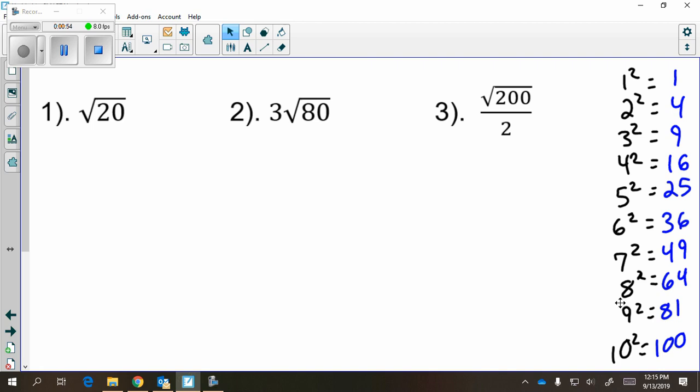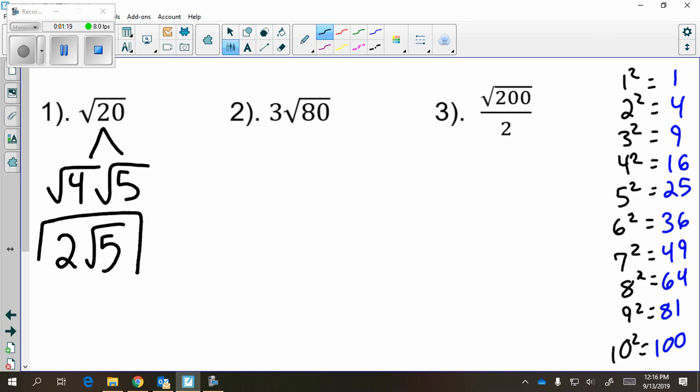So we're going to rewrite this as the square root of 4 times what gives me 20? 5. It's important that you put the radical over both of them. Now, you can take the square root of 4, right? It's 2, and when you take the square root the radical goes away. We can't take the square root of 5, so we're just going to leave it. So the square root of 20 simplifies to 2 radical 5.